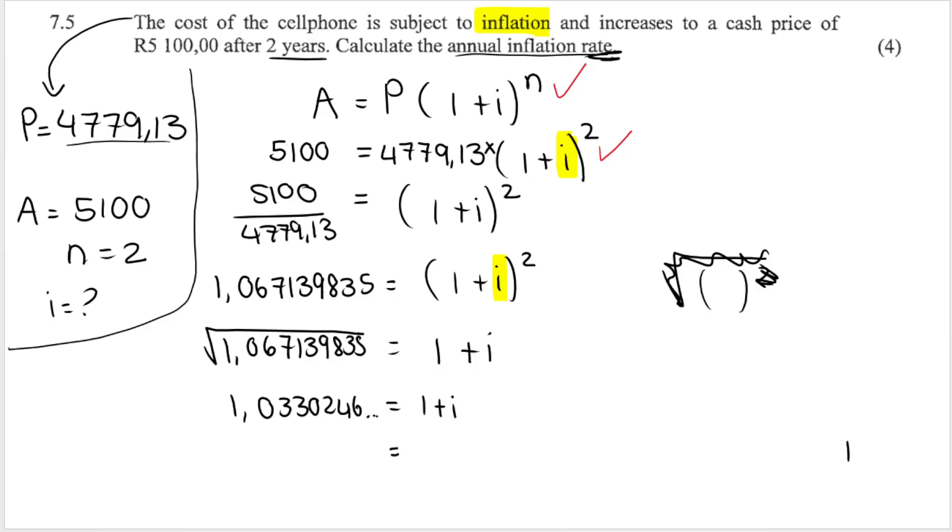Now, I is still not by itself. It is attached to the 1 by addition, plus 1. What's the inverse of plus 1? Yep, we have to minus 1. When we minus 1, what we get on the left-hand side is 0,033, and it goes on. Don't round off yet. But remember what we have discussed before, that I is an interest rate. And technically, what I is equal to, remember, we usually take I divided by 100 because it's a percentage. So, we need to multiply this by 100 to get I the percentage. And I get 3,30%.